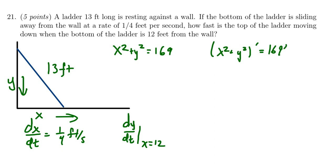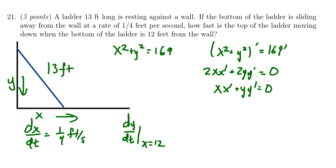Taking the derivative with respect to time on the left-hand side, we get 2X·X prime plus 2Y·Y prime. On the right-hand side, the derivative of a constant is 0. Dividing both sides by 2 gives us X·X prime plus Y·Y prime equals 0. Solving for Y prime, we subtract X·X prime from both sides, giving Y·Y prime equals negative X·X prime.